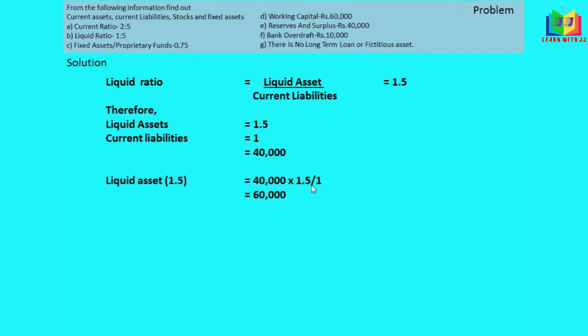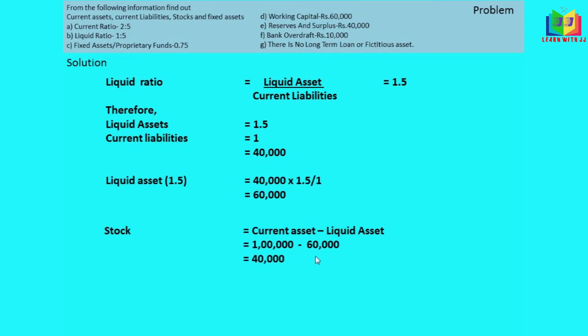Now, for stock, we use the liquid ratio formula: liquid assets divided by current liabilities equals 1.5. Current liability is 40,000, so liquid assets equal 1.5 into 40,000 which is 60,000. Stock equals current assets minus liquid assets, so stock equals 40,000.